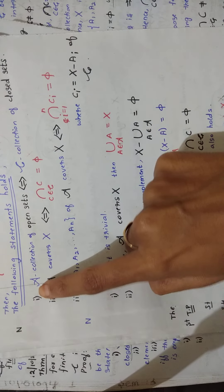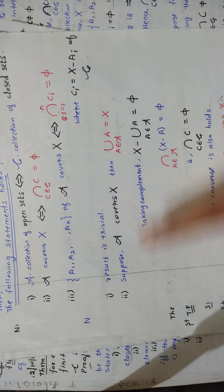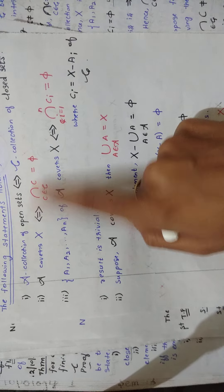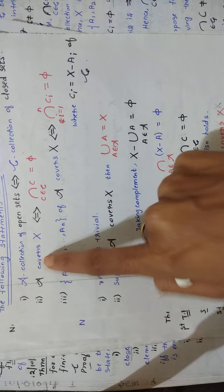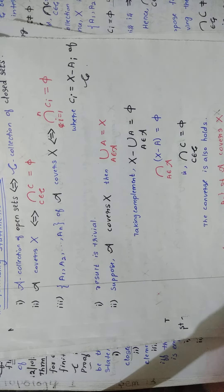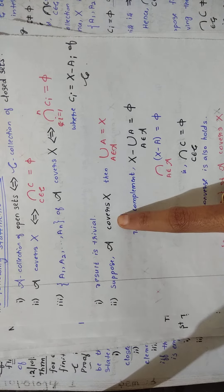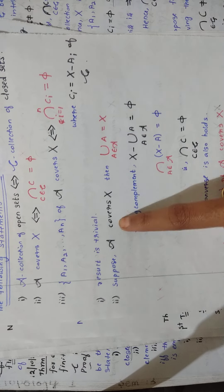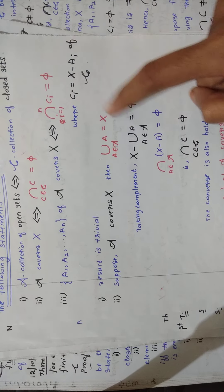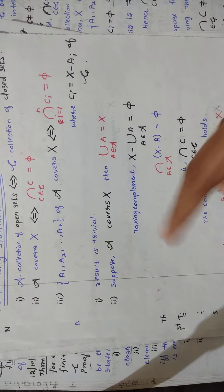The first condition needs no proof — just state the result is trivial. For the second condition, suppose script A covers X. By the definition of covering, the union of all A belonging to script A equals X. Taking the complement: X minus the union of A belonging to script A equals empty.